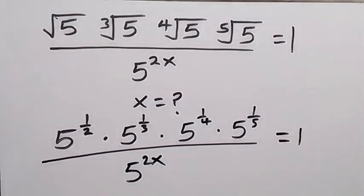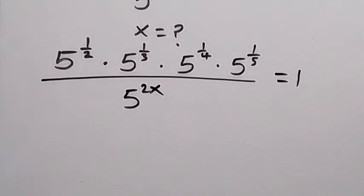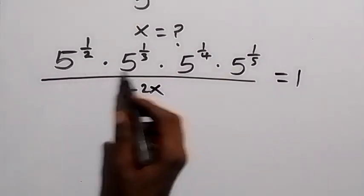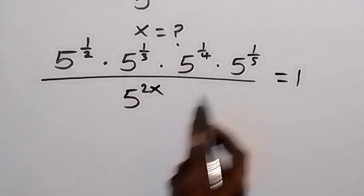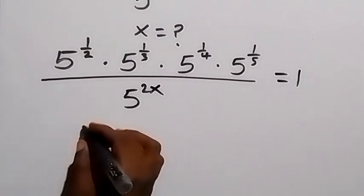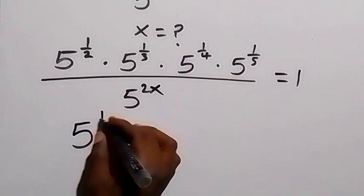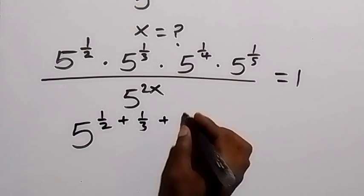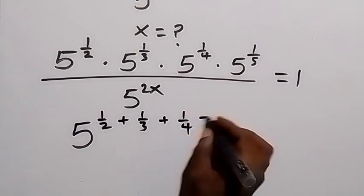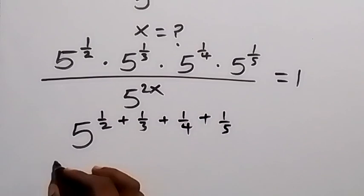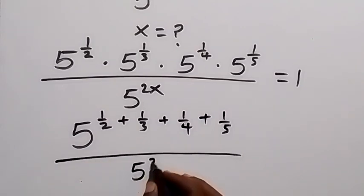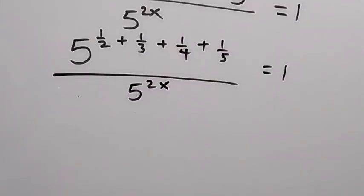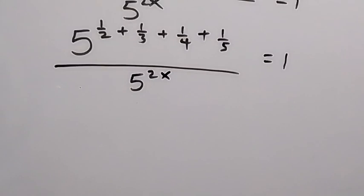From here we bring this together using the law of indices. Since the bases are the same and they are multiplying, we add the powers. This gives us 5 raised to power (1/2 + 1/3 + 1/4 + 1/5), divided by 5 raised to power 2x, equals 1.